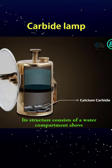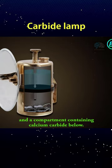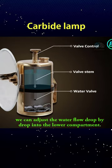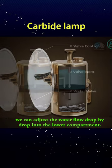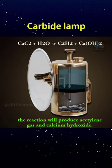Its structure consists of a water compartment above and a compartment containing calcium carbide below. With the help of a small valve, we can adjust the water flow drop by drop into the lower compartment. At that point, the reaction will produce acetylene gas and calcium hydroxide.